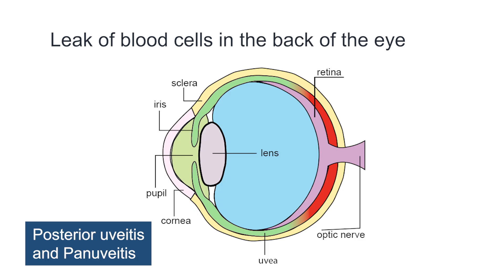You can also get inflammation in the back of the eye, called posterior uveitis, and inflammation affecting all parts of the eye, called pan uveitis. These types can damage the nerves which help you see.